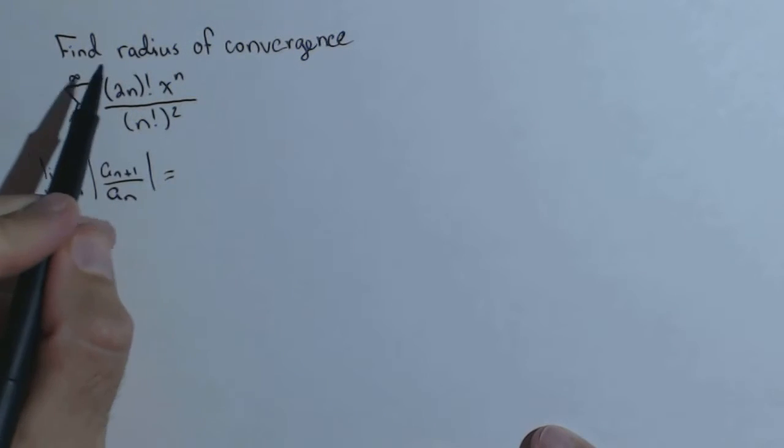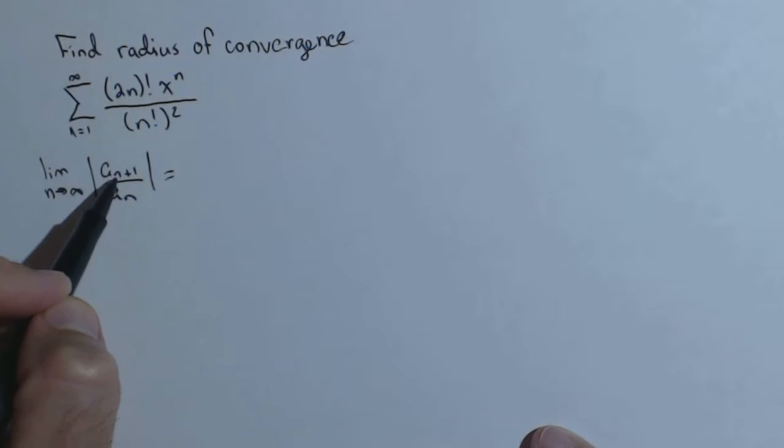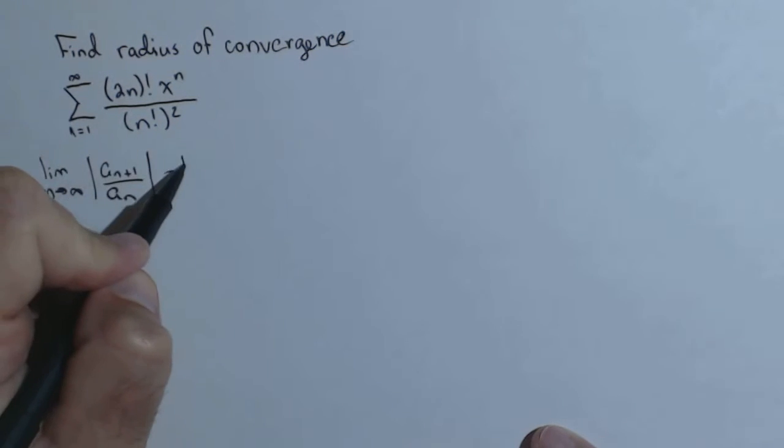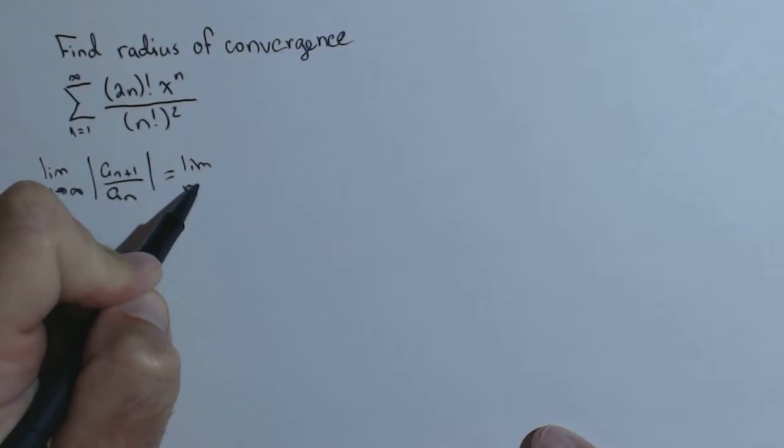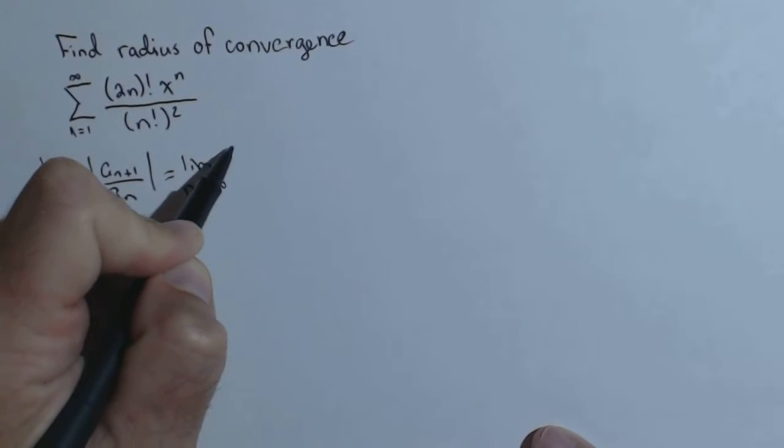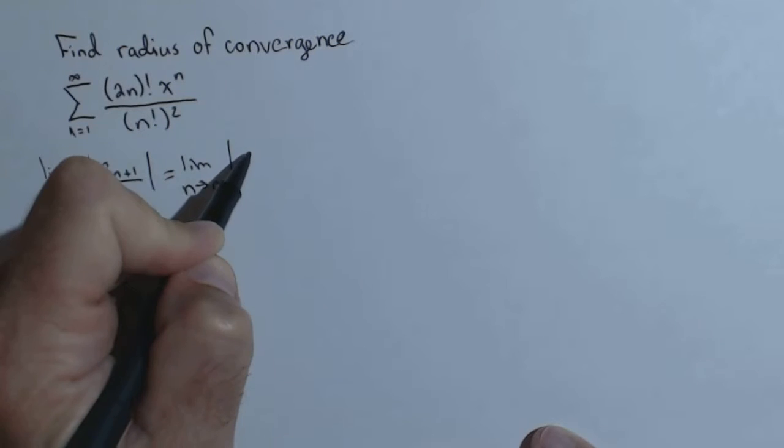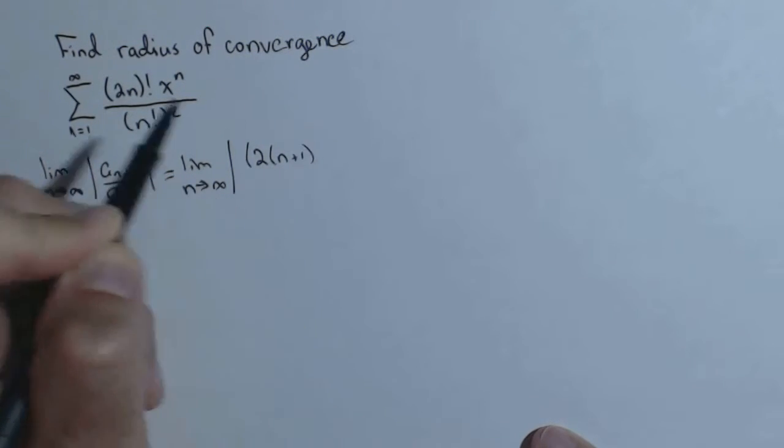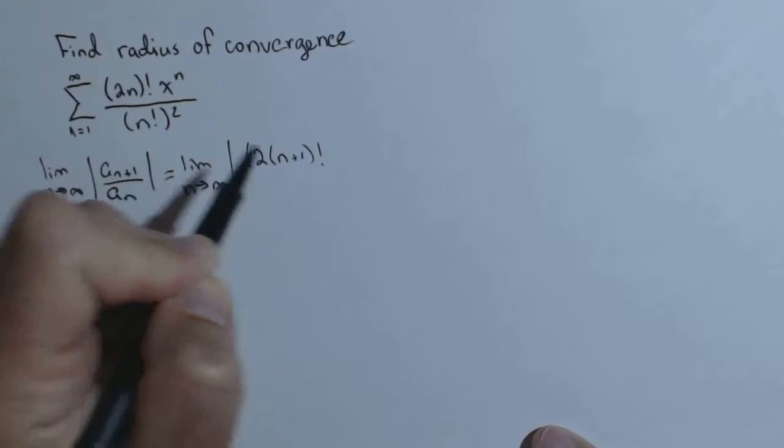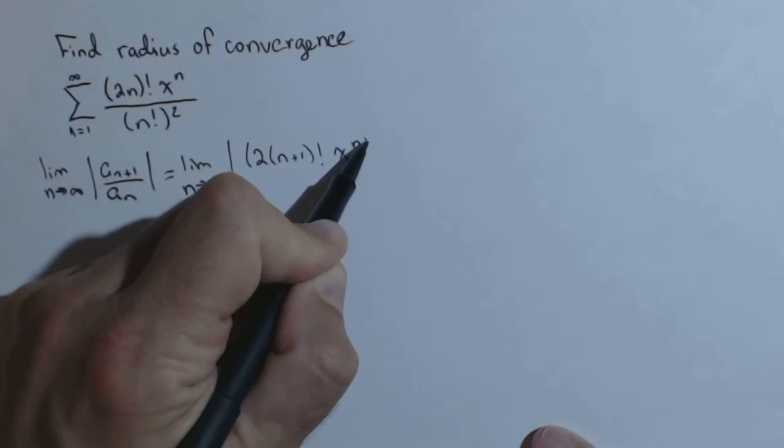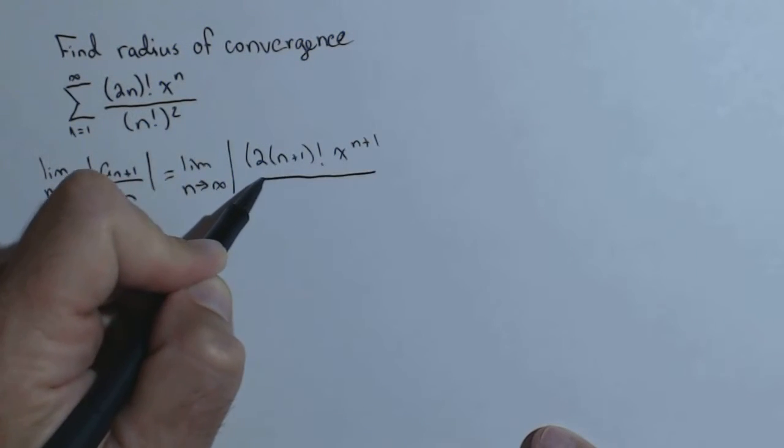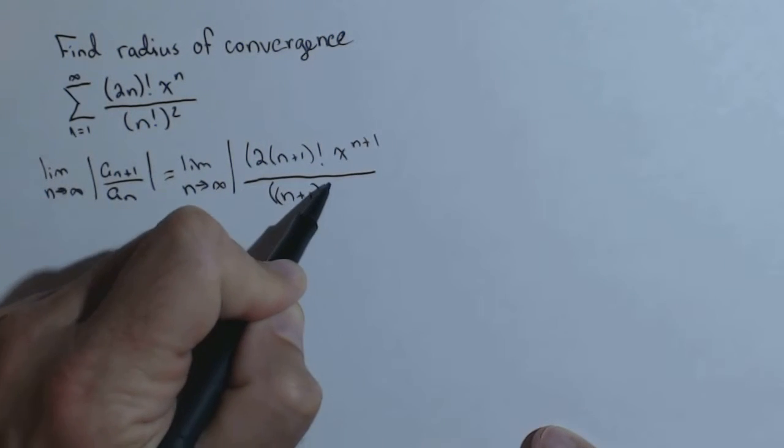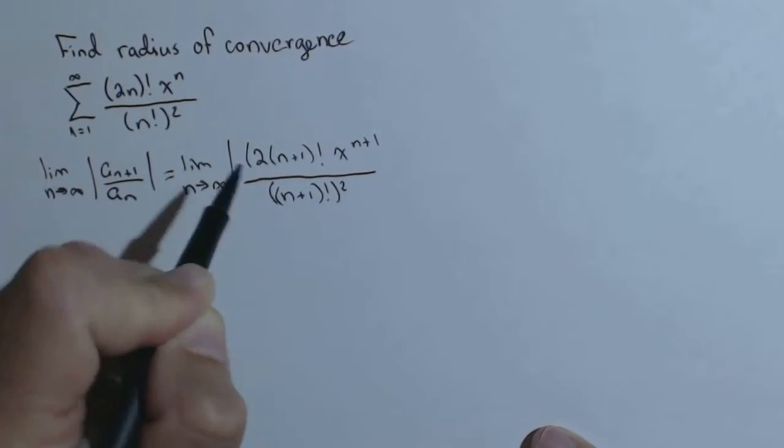And so setting this up, basically what we end up doing is a sub n plus 1 times the reciprocal of a sub n as a bit of a shortcut, so limit as n goes to infinity. Let's start with a sub n plus 1. So that'll be 2 times n plus 1 factorial, x to the n plus 1, over n plus 1 factorial squared.